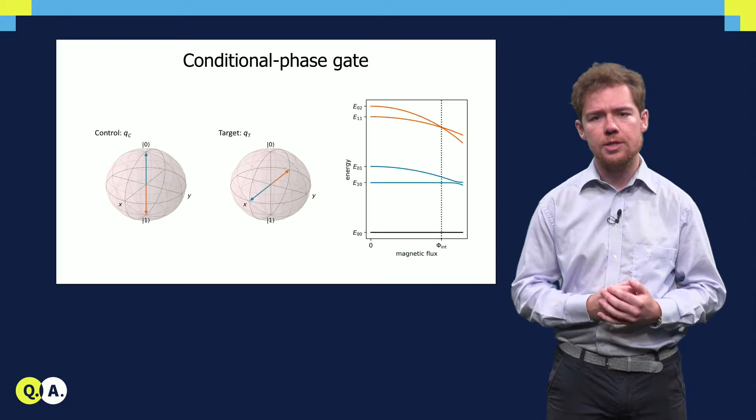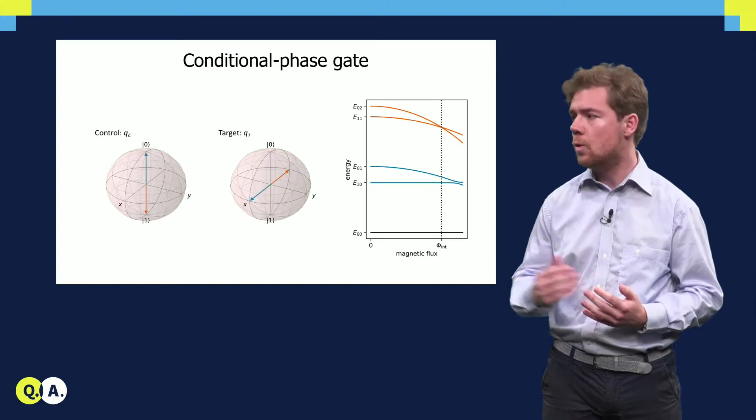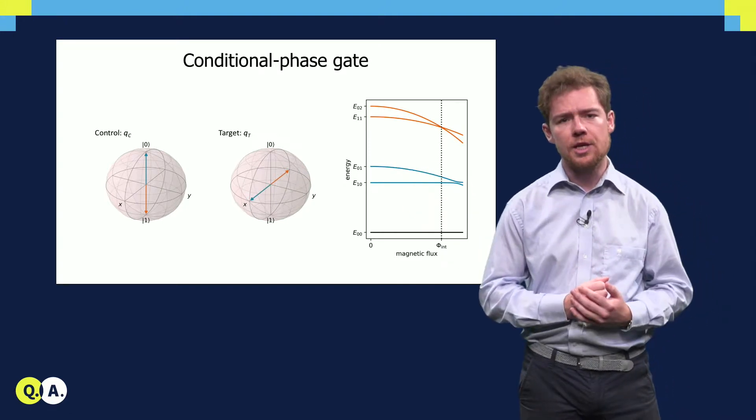In transmon qubits, the C-phase gate is implemented by tuning in and out of resonance with an interaction in a two-excitation manifold.